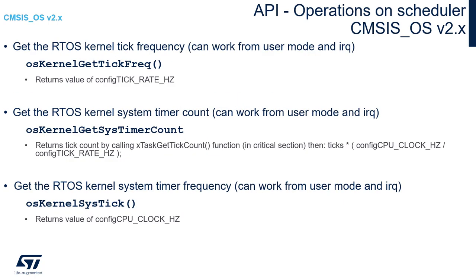Let's have a look at some supportive API functions for the scheduler. To get the RTOS kernel tick frequency, we use osKernelGetTickFreq. To get the FreeRTOS kernel system timer count, we call osKernelGetSysTimerCount. To get the FreeRTOS kernel system timer frequency — the SysTick frequency — we call osKernelGetSysTimerFreq. Note that all of these functions can be called from user code as well as from an interrupt.